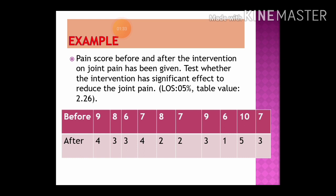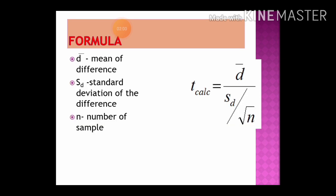Let us see an example. Here, the pain score before and after an intervention on joint pain is given. We need to test whether the intervention has a significant effect in reducing joint pain. The scores before and after intervention are given for 10 subjects. The level of significance stated in the question is 0.05, and the table value is 2.26.